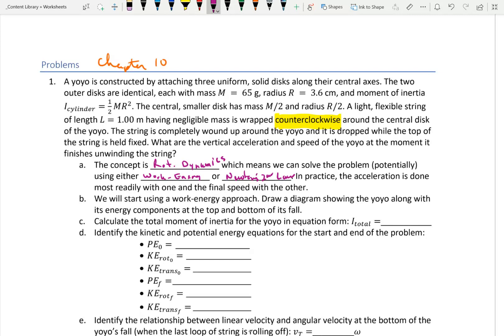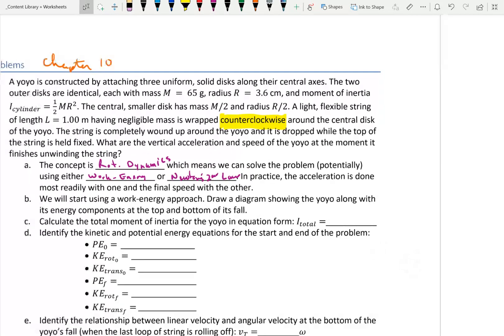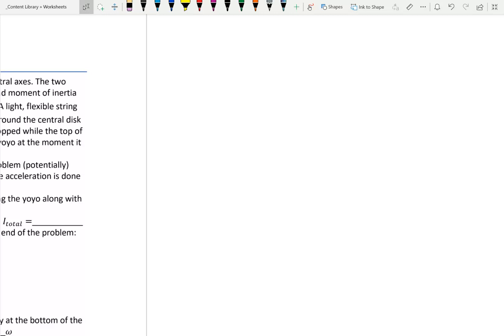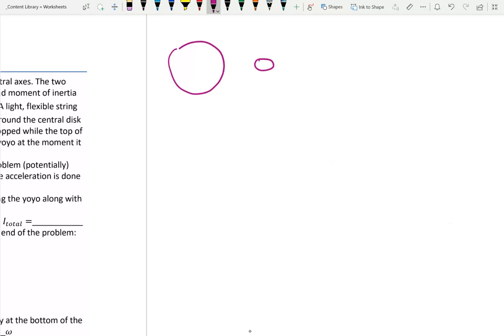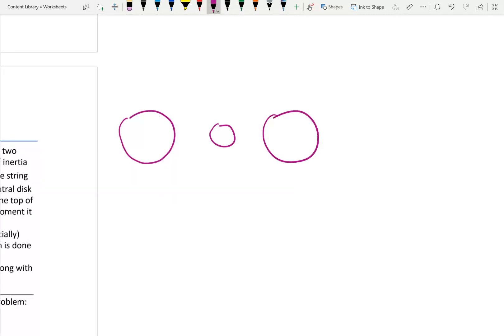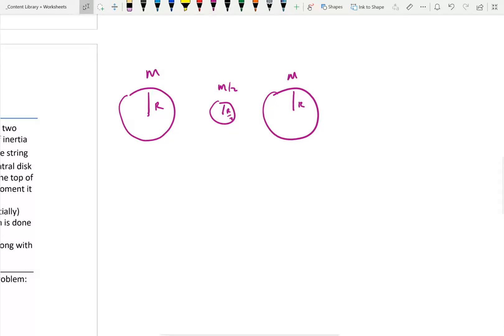So, we'll start using the work energy approach. Draw a diagram showing the yo-yo along with its energy components at the top and bottom of its fall. Before I even do that, I want to get information for the yo-yo specifically. So, the yo-yo is made of three pieces. Obviously, you already did this for homework, but it's good to do it again. So, basically, there's my three pieces. This one is radius R, this one is radius R over 2, and this one is radius R. This is mass M, mass M over 2, and mass M. So, the moments of inertia for these three are I1 equals I1 equals one half mass times radius squared. I2 equals one half, the mass of this one is M over 2 times the radius of this one, R over 2 quantity squared. And then, finally, the last one, I3 equals one half M R squared again.